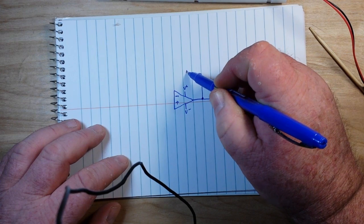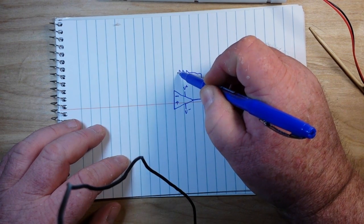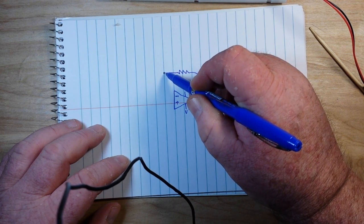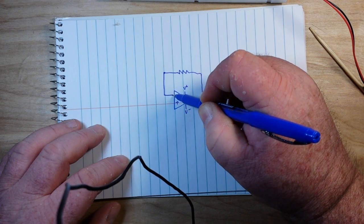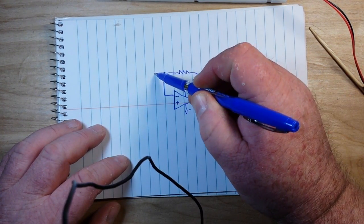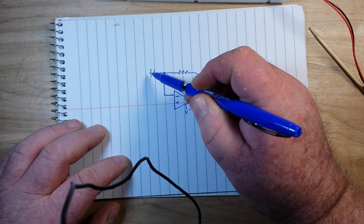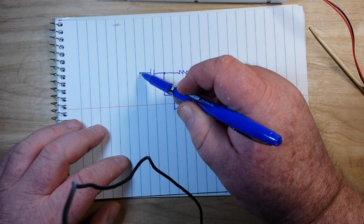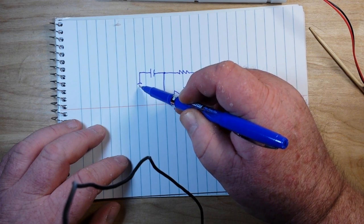Now the first step is we are going to come off the output to a feedback resistor, which we are going to bring into the inverting input. But we are also going to in parallel put in a capacitor that goes to ground.